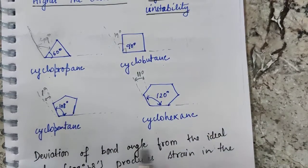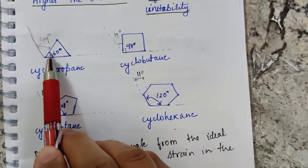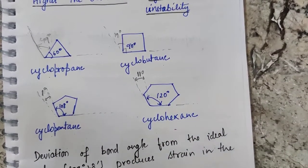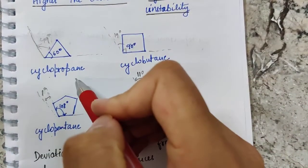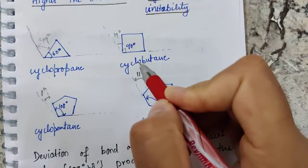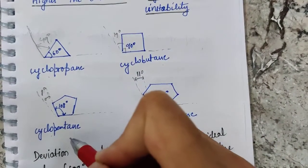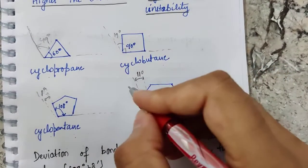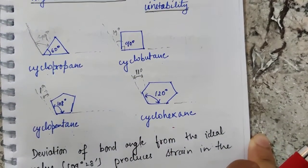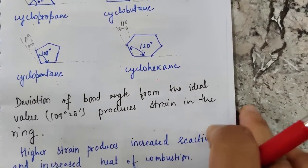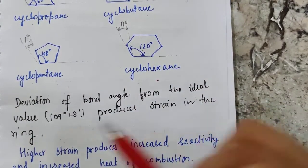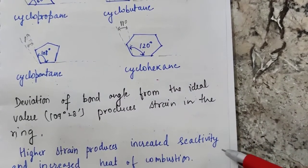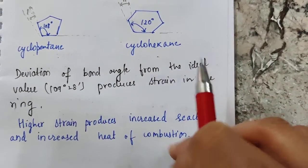For four cycloalkanes — cyclopropane, cyclobutane, cyclopentane, and cyclohexane — the bond angles are 60°, 90°, 108°, and 120° respectively. The deviations from the tetrahedral angle are: cyclopropane ~49°, cyclobutane ~19°, cyclopentane ~1°, and cyclohexane ~11° (negative deviation). Deviation of bond angle from the ideal value produces strain; higher strain produces increased reactivity and increased heat of combustion.